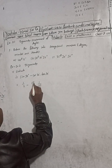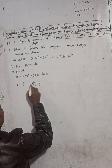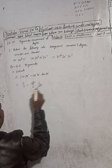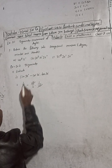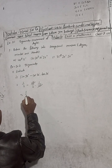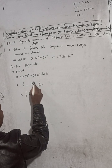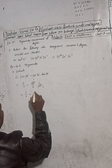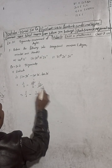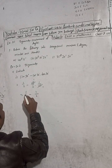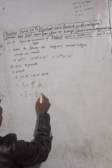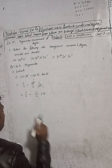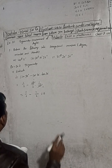tan 30 value is 1 by root 3. With root 3 and root 3, root 3 cancels. So we get 1 into 3, giving 1 by 3. So root 2 and root 3 gives 0 as the final answer.